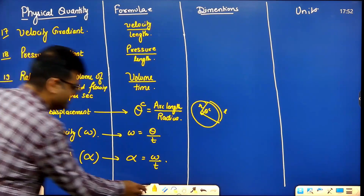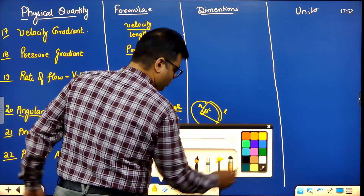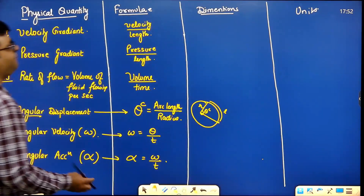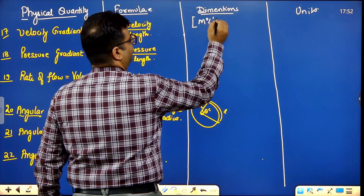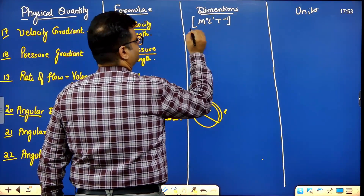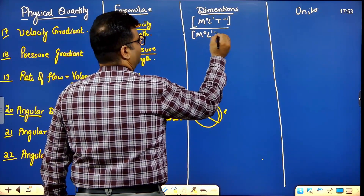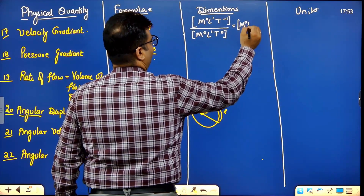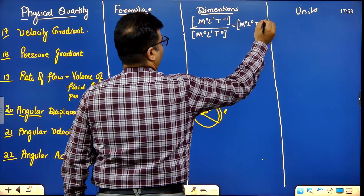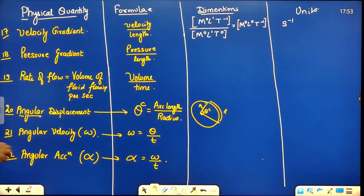Let's check the answers. The first one — velocity gradient — is velocity upon length. Velocity dimensions are M⁰L¹T⁻¹, length is M⁰L¹T⁰. Dividing and subtracting powers: M⁰L⁰T⁻¹. So its units are second inverse (s⁻¹).